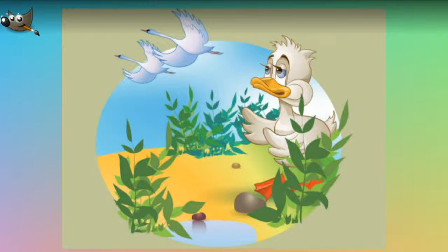And the duckling sat in a corner and was melancholy. Then the fresh air and sunshine streamed in, and it was seized with such a strange longing to swim on the water that it could not help telling the hen of it.